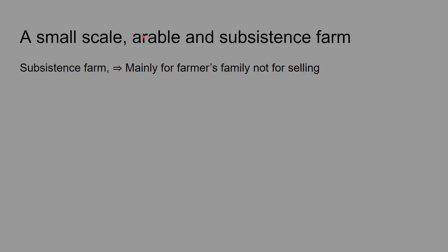A small-scale arable and subsistence farm is a very small farm used by the family for itself. It basically produces crops that are utilized by the family itself and are not used for selling purposes.